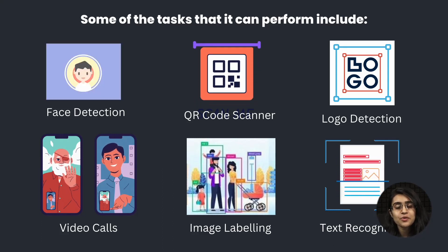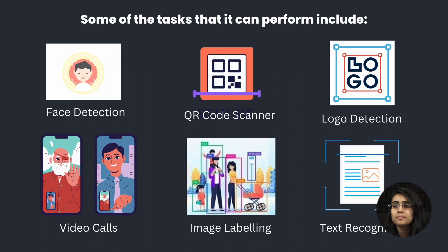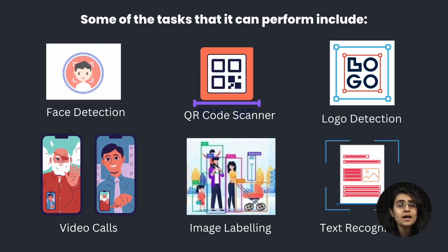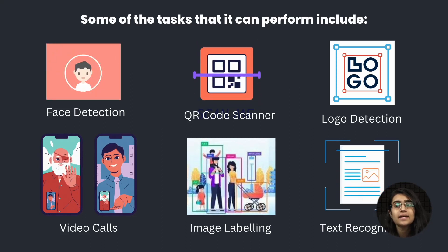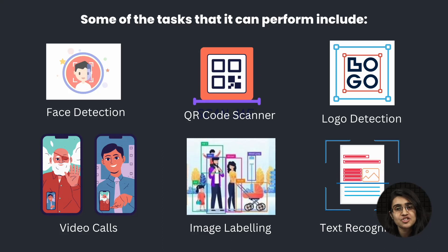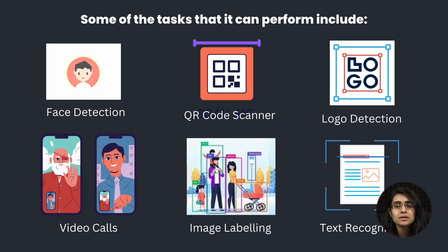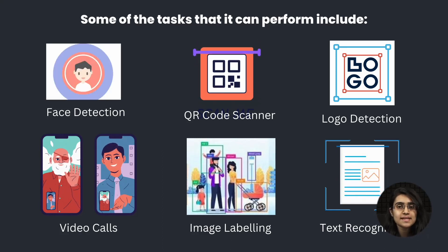Then there is QR code scanner, which is used if you want to make any transactions using UPI payment apps. And if you want to scan the menu in a restaurant where paper menus are not available, QR code scanner comes into play.